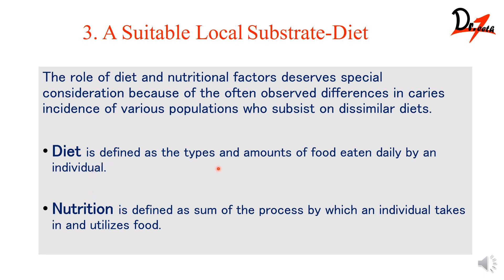Diet is defined as the type and amount of food eaten daily by an individual — including protein, carbohydrates, vitamins, and minerals. Nutrition, on the other hand, is the sum of the processes by which an individual takes in and utilizes food. So diet is what and how much you eat, while nutrition is how the body utilizes it — that is the key difference between diet and nutrition.